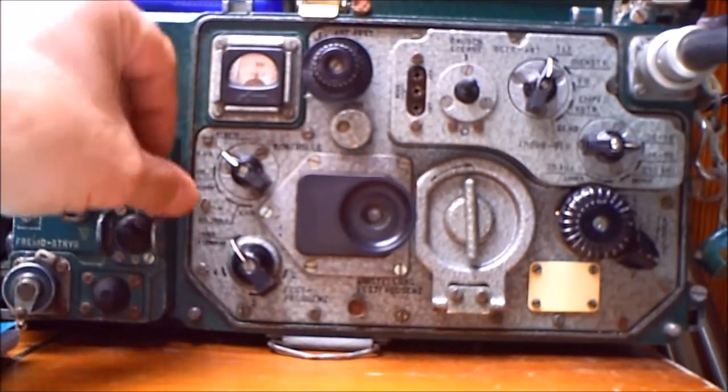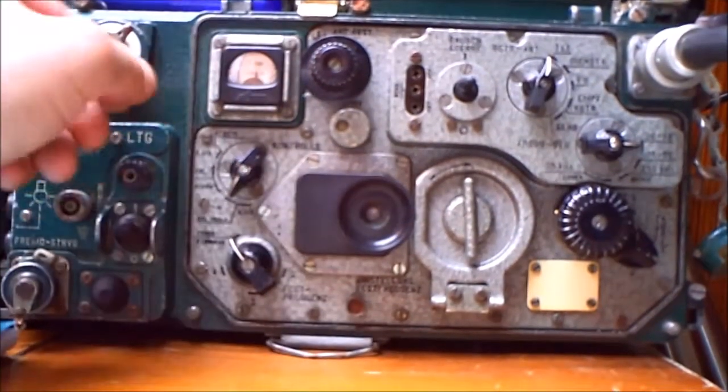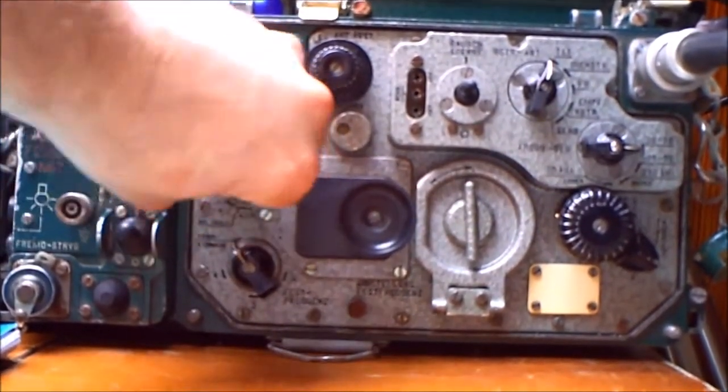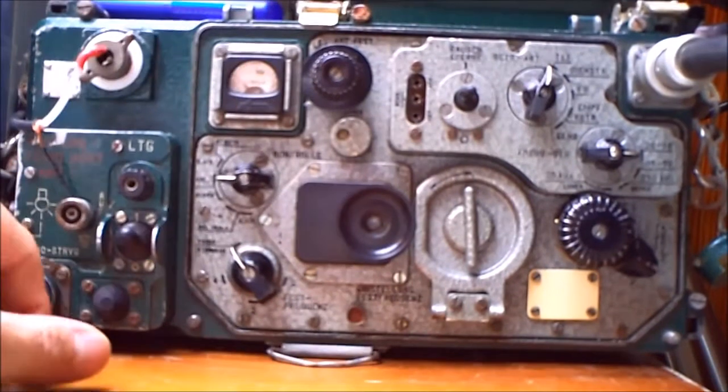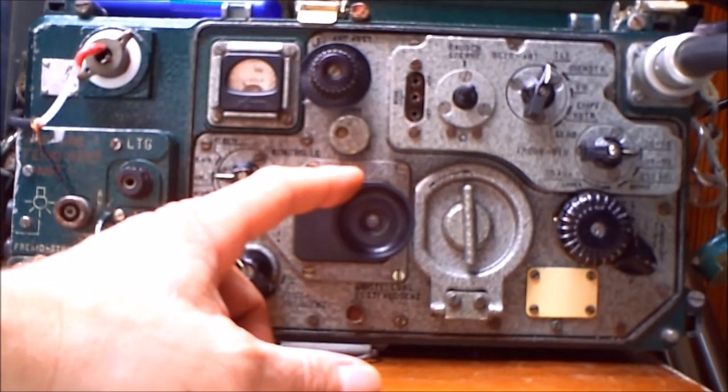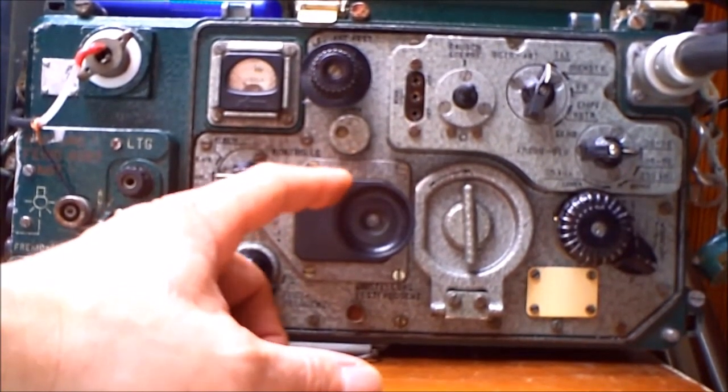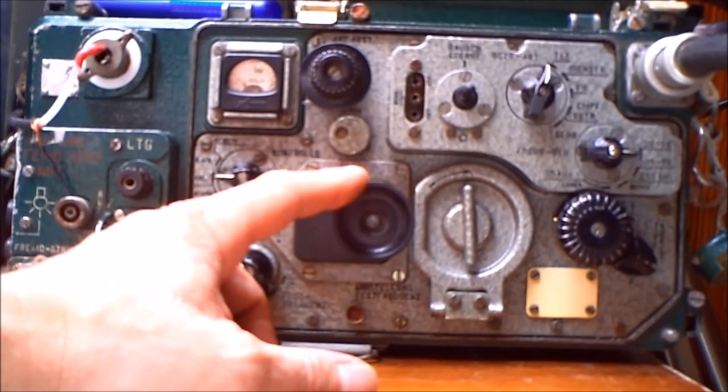It's in the green area from the batteries, the three voltages. And here you have a little eyepiece for the frequency scale.